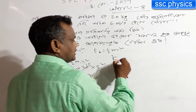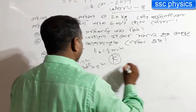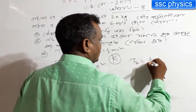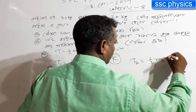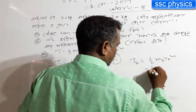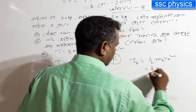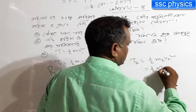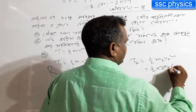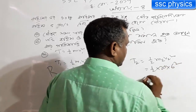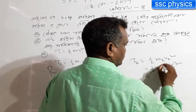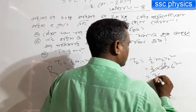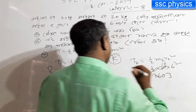What is T2 = ½ M2 V2 square? What is this? 20, 2.6. This is 10, 316, 2 Joule.